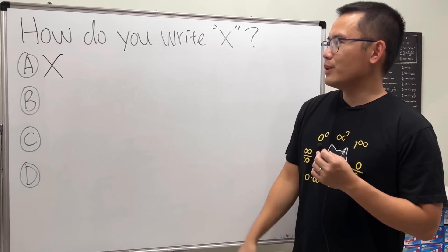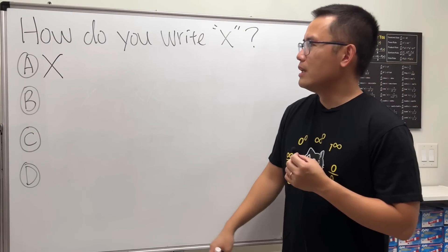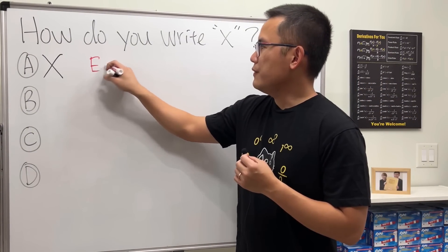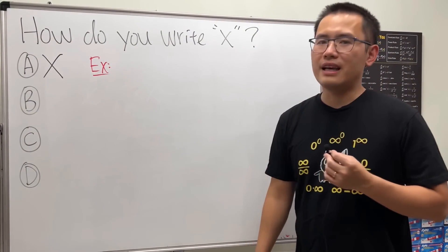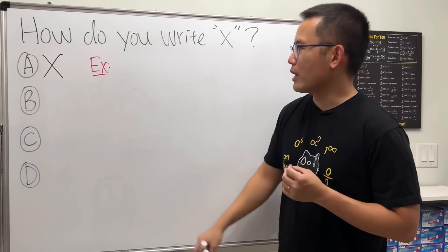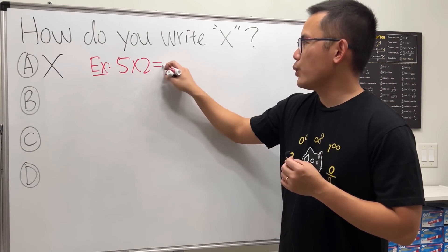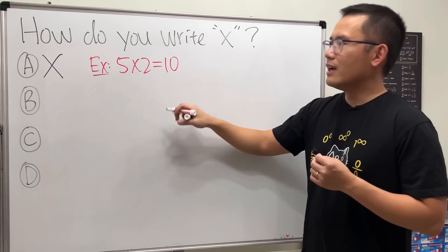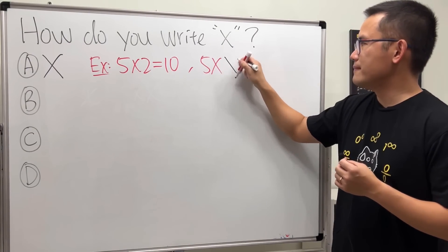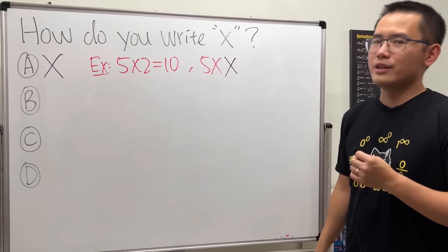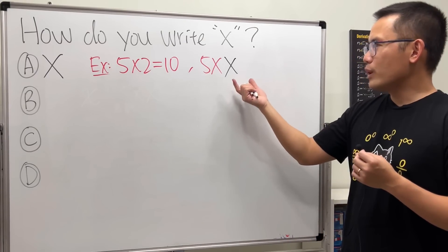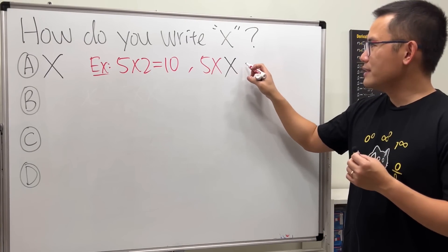But we know this has a problem. For example, if you want to say five times x, that's going to be trouble. Back in the days you can say five times two, that's equal to 10. But if you want to say five times x, that is weird, right?